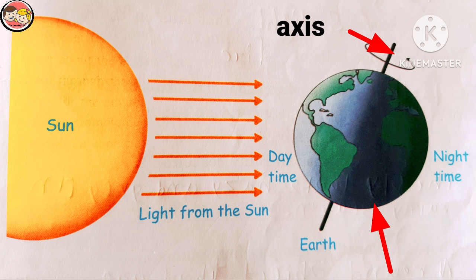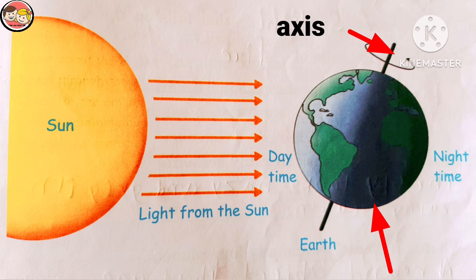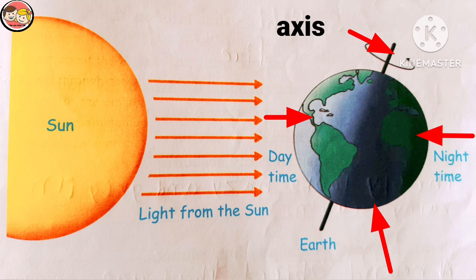The side of the earth that comes in front of the sun and receives the sun's light — the part where sunlight falls — that is day. And the opposite side of the earth that faces away from the sun, that is night. So day and night occur due to the earth's rotation.